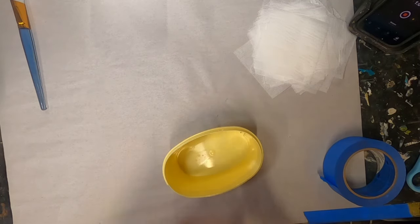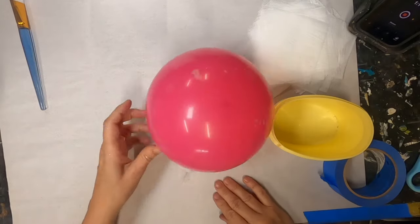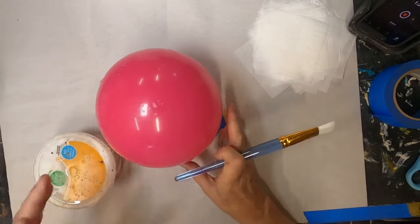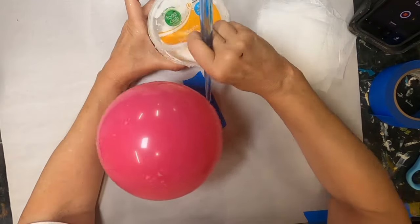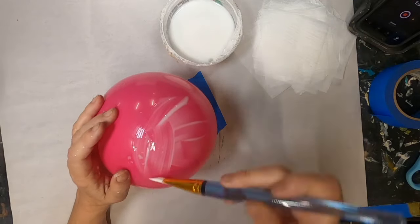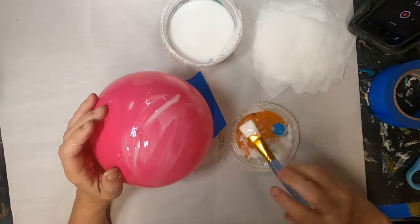I thought about setting it in that butter tub, but I don't think that's going to work. I'll put that butter tub aside, tape my balloon down, get out my glue and water mixture, and start to coat that balloon.